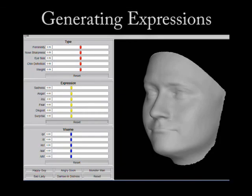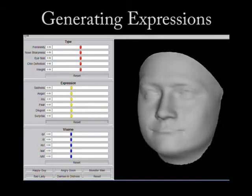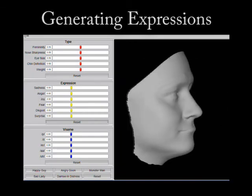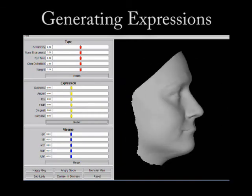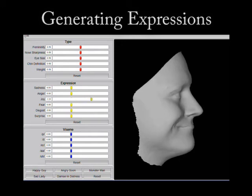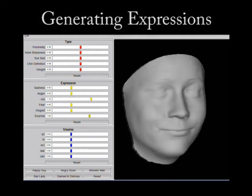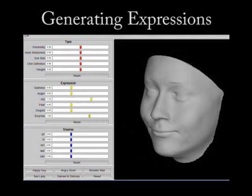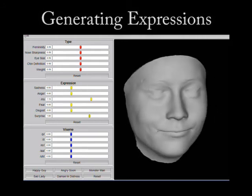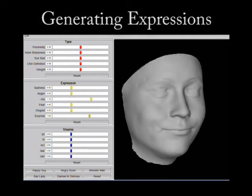In this example, we generate new faces that exhibit a combination of emotions that was never present in the original dataset. This face combines an expression of joy and surprise. Notice that our model captures the nuances and small movements of the entire face that together make up the full expression of emotion.